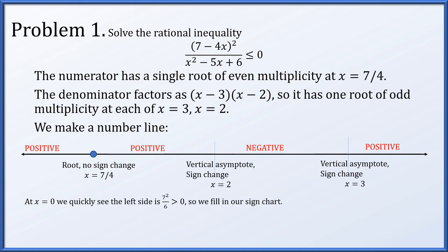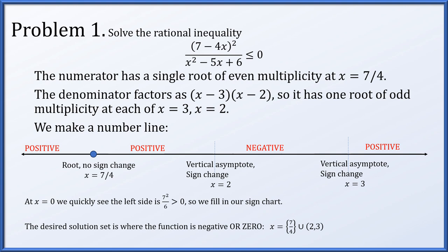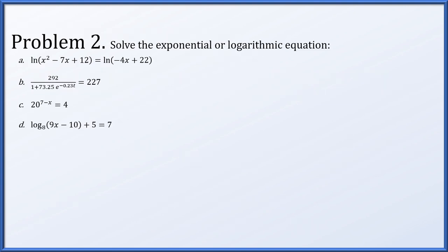Referring back to the original problem — where is this function less than or equal to zero? — we include all points where we are negative plus the single root where we equal zero. The solution is the single value x equals 7/4, together with the open interval from 2 to 3. The endpoints 2 and 3 are excluded because they are vertical asymptotes and not in the domain.